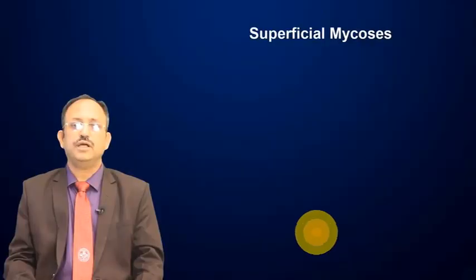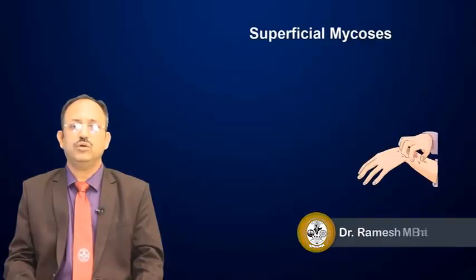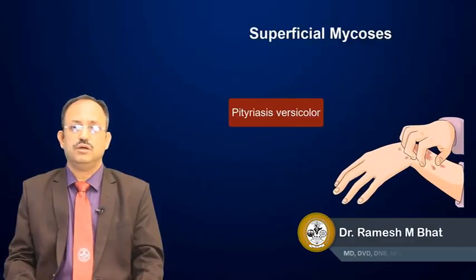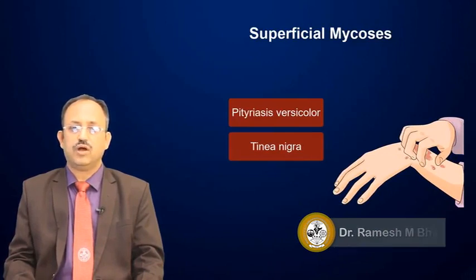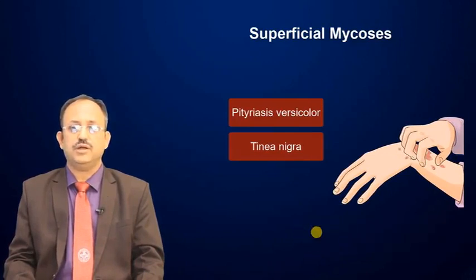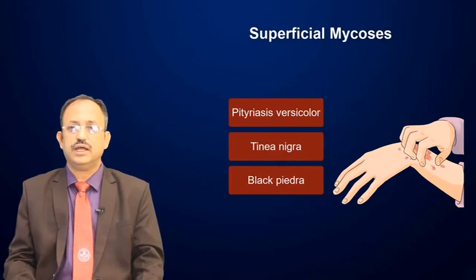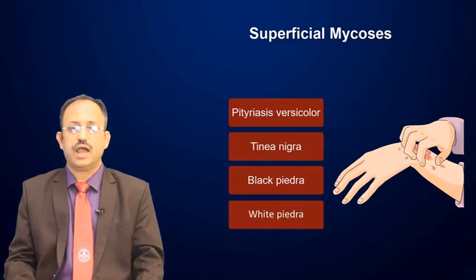The superficial mycoses include Pityriasis versicolor or Tinea versicolor, which is quite common especially in hot and humid climates, then Tinea nigra, black piedra, and white piedra.